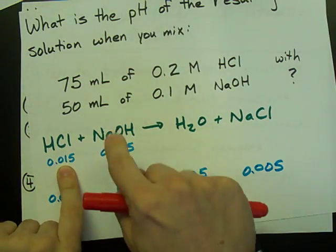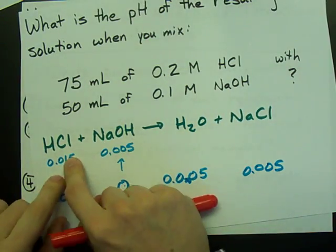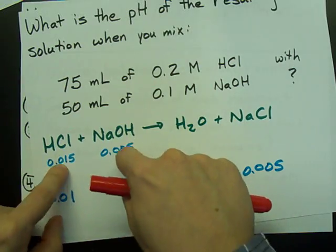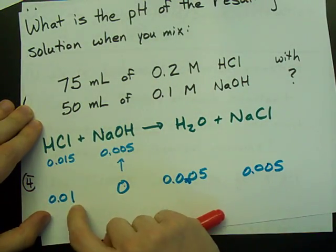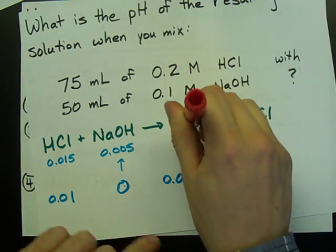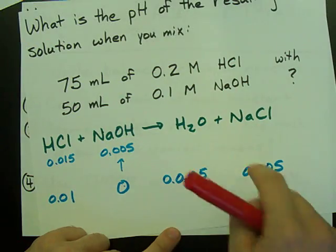Okay, let's recap that. These two react, I ran out of this first. It all disappears. I notch this down by that amount, because I'm reacting that much of it away. So I'm down to 0.01. And I make 0.005 of this, and I make 0.005 of that.